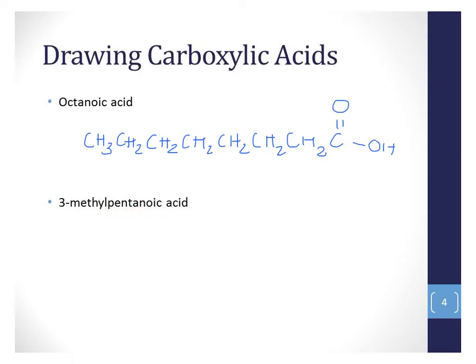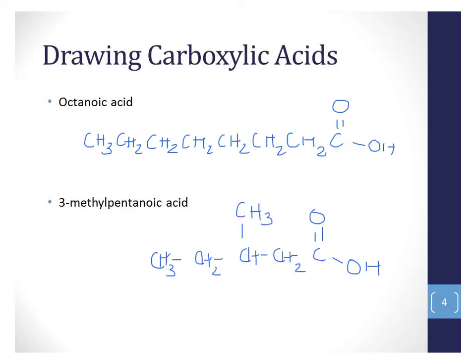Pentanoic acid tells us that we have a carboxyl group and a 5-carbon chain. The rest of the name tells us our substituent — a 1-carbon substituent — and where to find it. We number from the carboxyl group 1, 2, 3 to make 3-methylpentanoic acid.